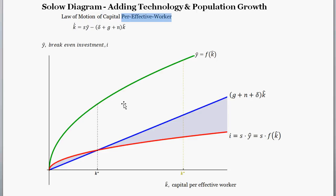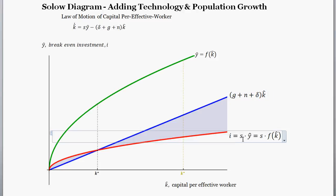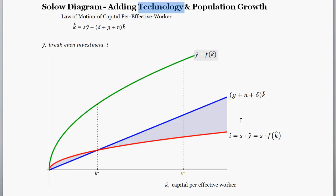The other useful thing is that you can shift these curves. You can shift the growth rate of labor-augmenting technology, the growth rate of the labor supply, and depreciation — that shifts the blue break-even line up or down, changing the steady state. You can also shift the savings rate: increasing it shifts the red investment line up, decreasing it shifts it down. You could also shift total factor productivity, which would shift the green output line and the red investment line up or down. Note that labor-augmenting technology does something different from total factor productivity.